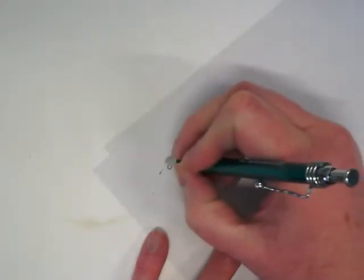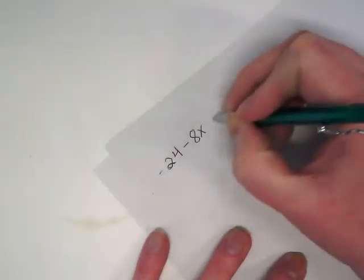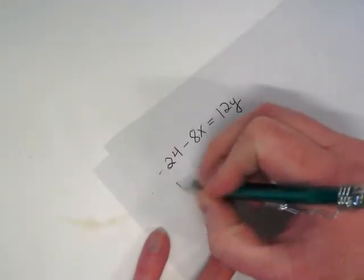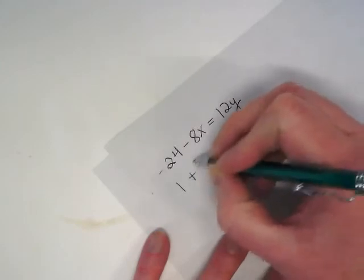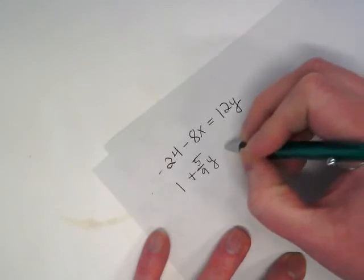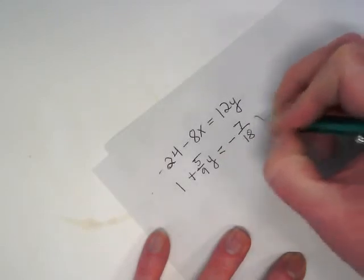So for problem 18, it is negative 24 minus 8x equals 12y, and 1 plus 5 ninths y equals negative 7 eighteenths x.